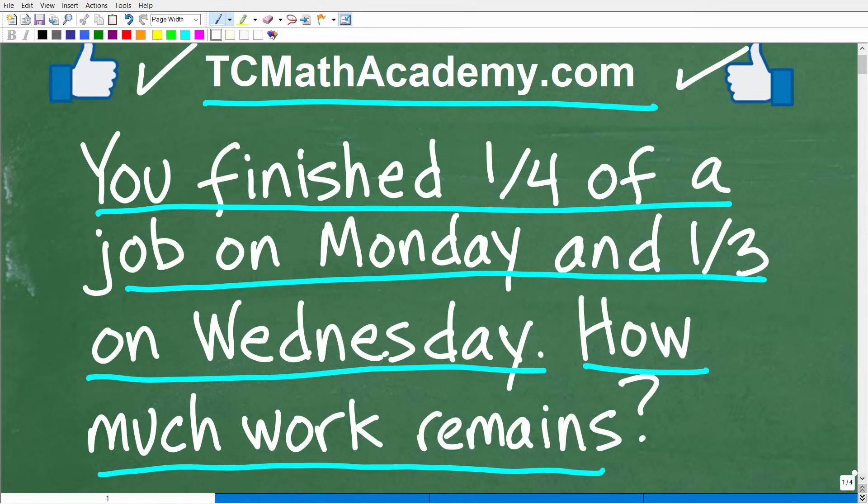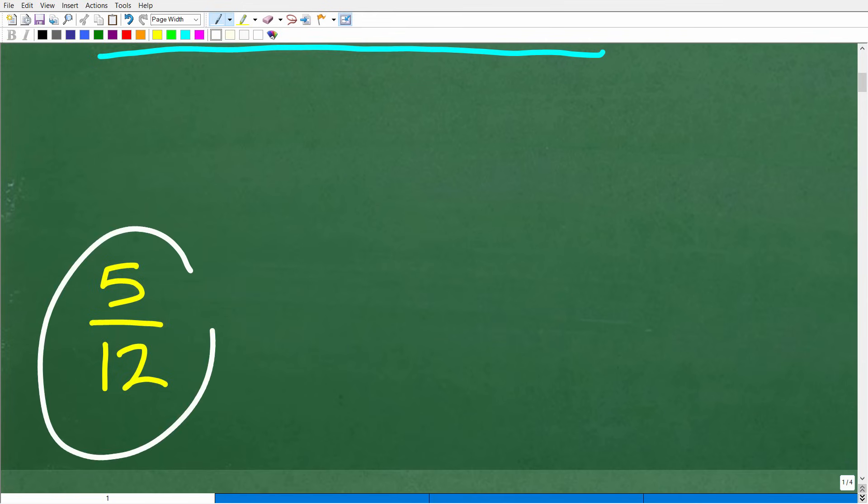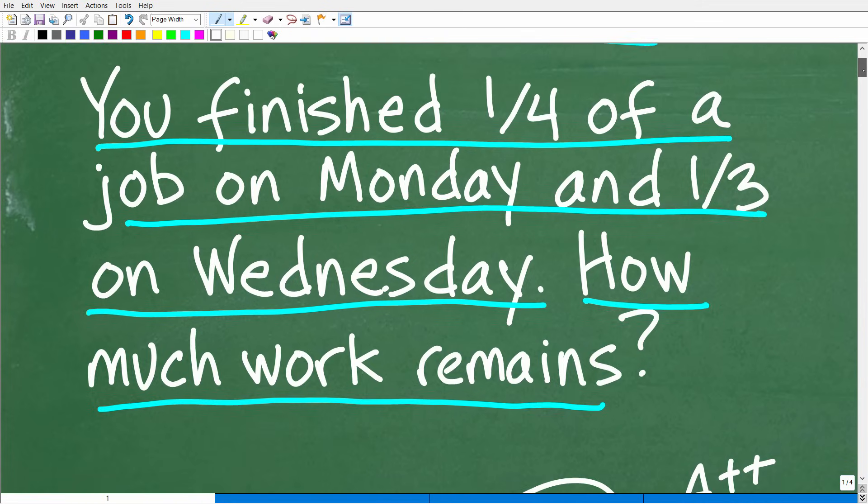Okay, so here is the problem. If you want to work on it for a second, just pause the video. But let's go ahead and take a look at the answer. The answer is 5 twelfths. Okay, so that's how much work remains. And if you got this right, that is fantastic. Matter of fact, let's celebrate by giving you a nice little happy face and A++, a 120% and multiple stars.